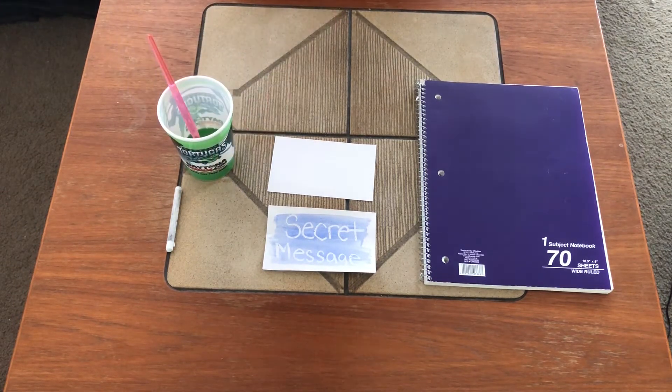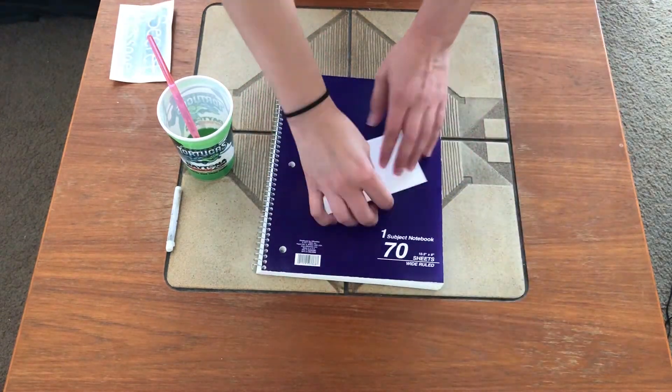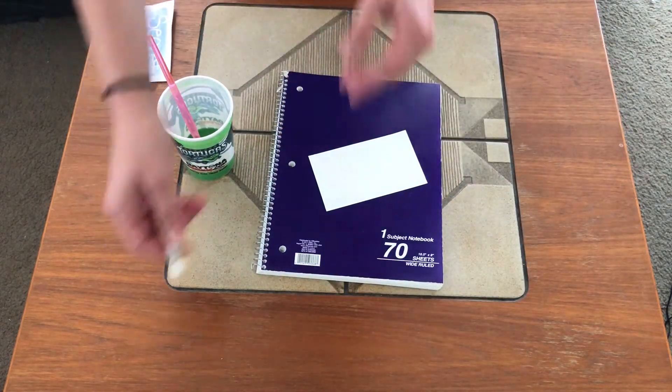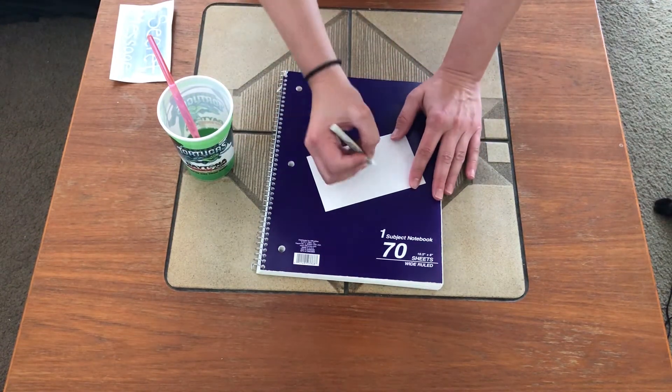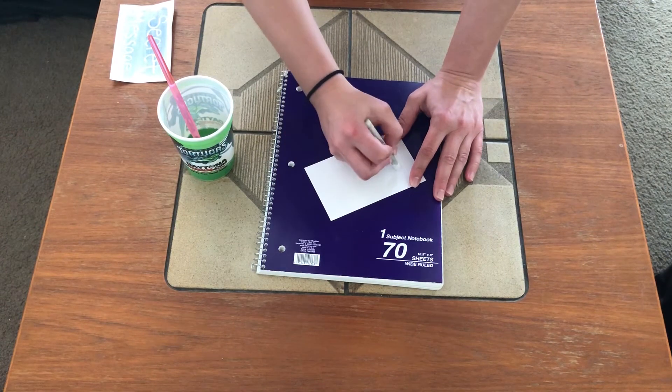So let's go ahead and get started. I'm going to use this just to write on since my table is bumpy. So what you're going to do is take your white crayon and just write out or draw on your white piece of paper.